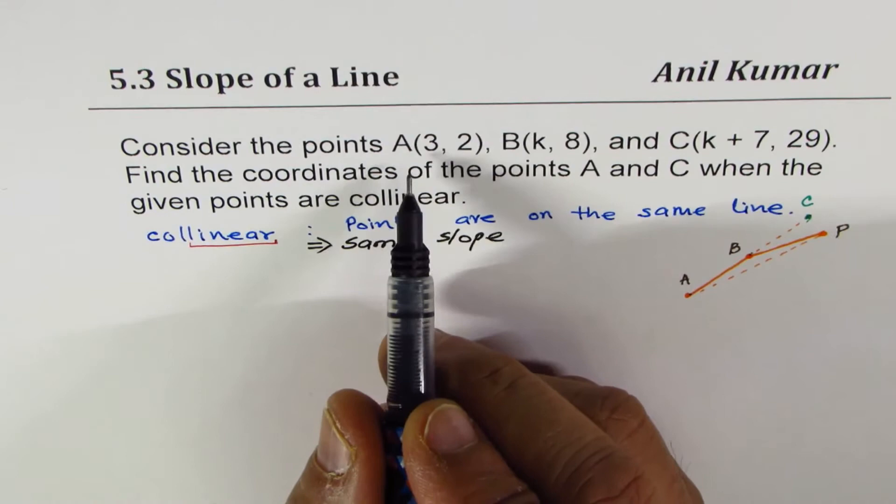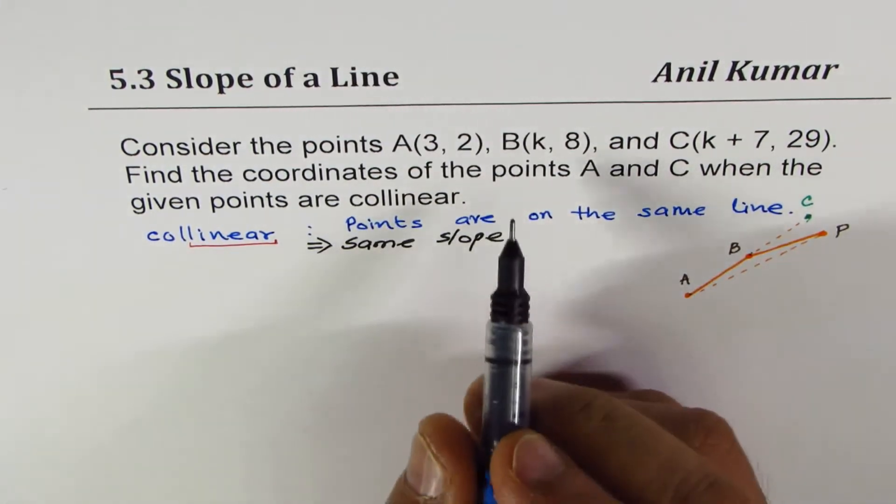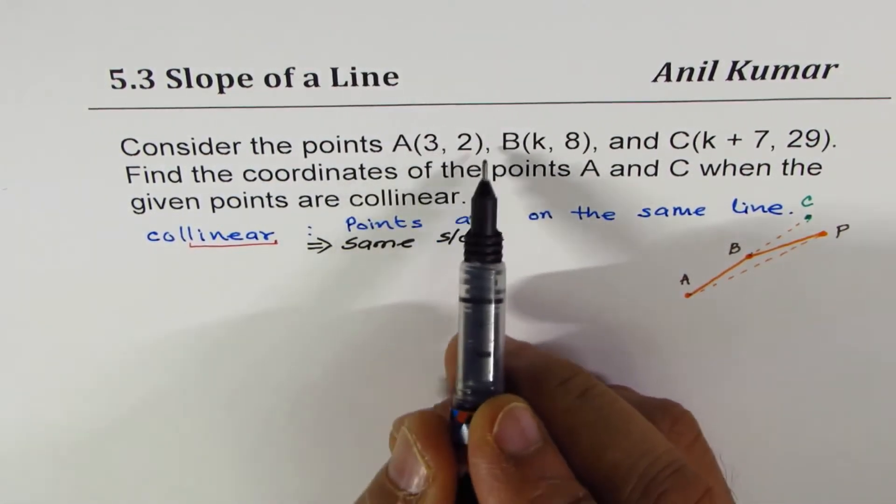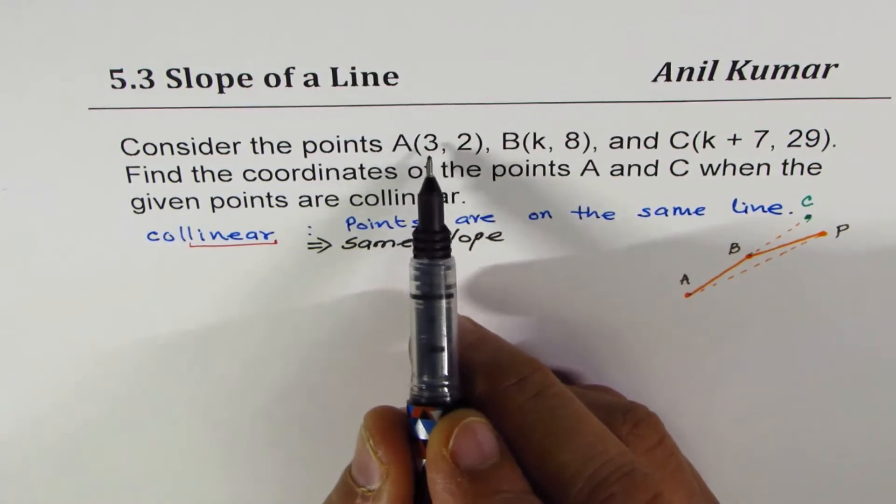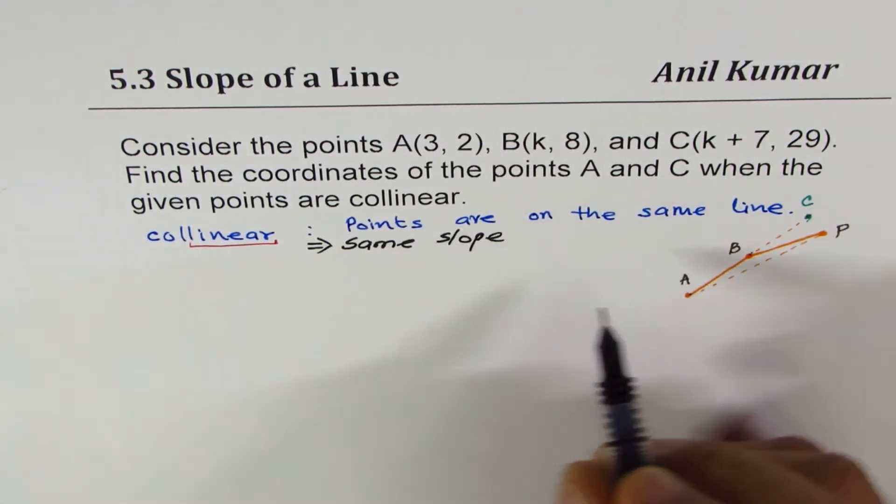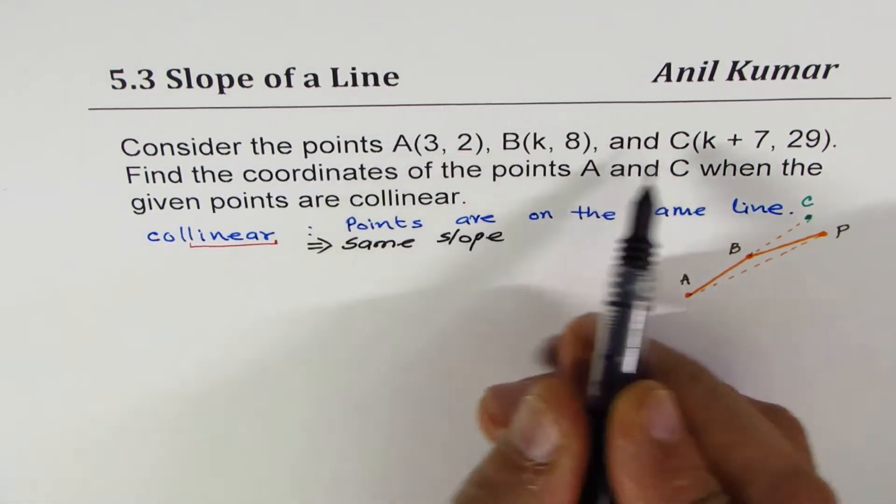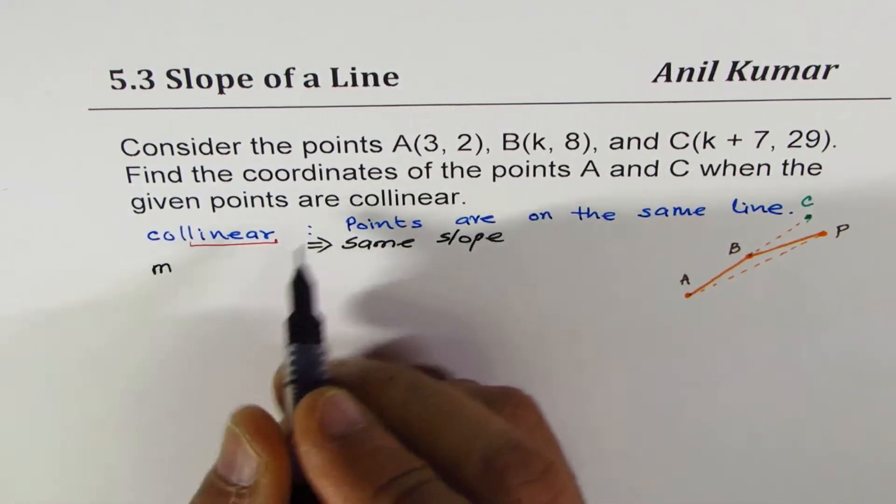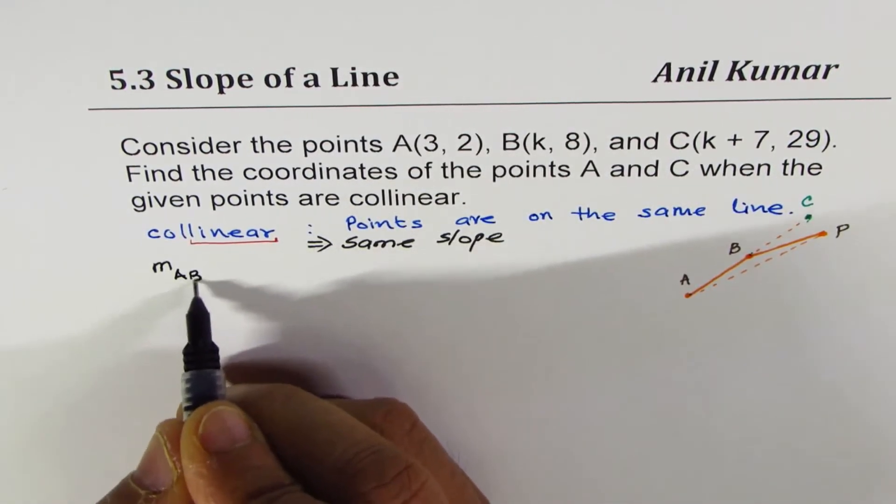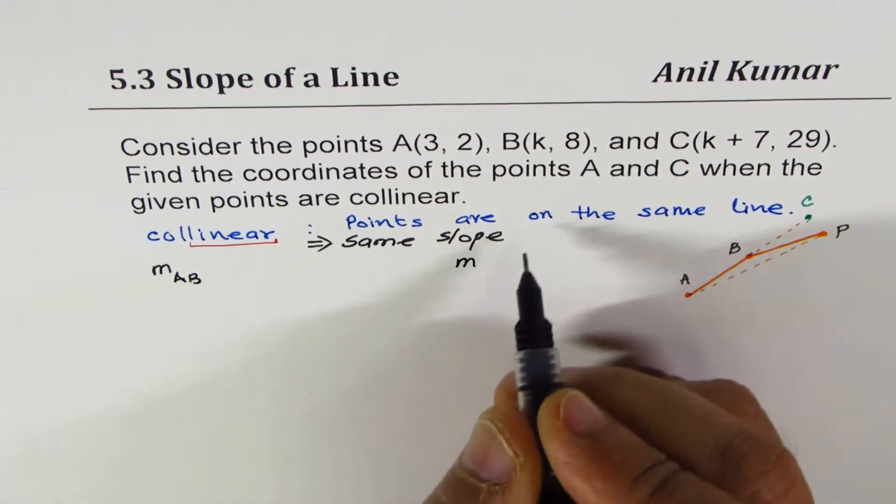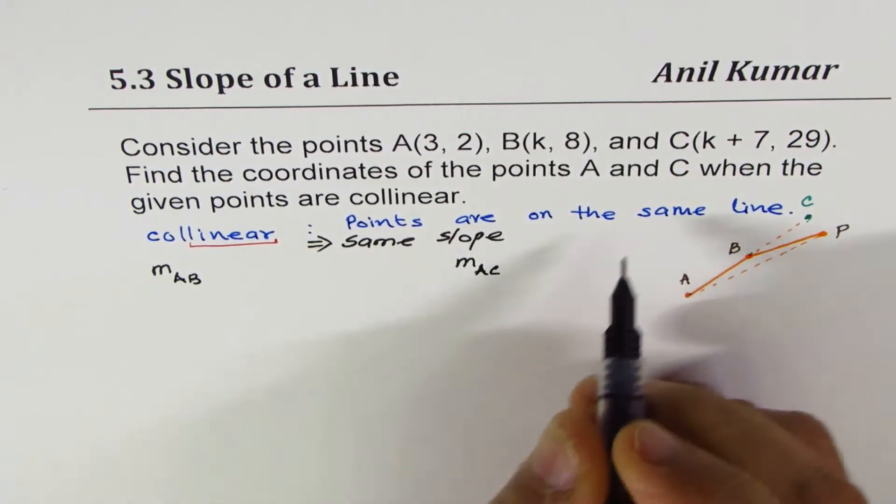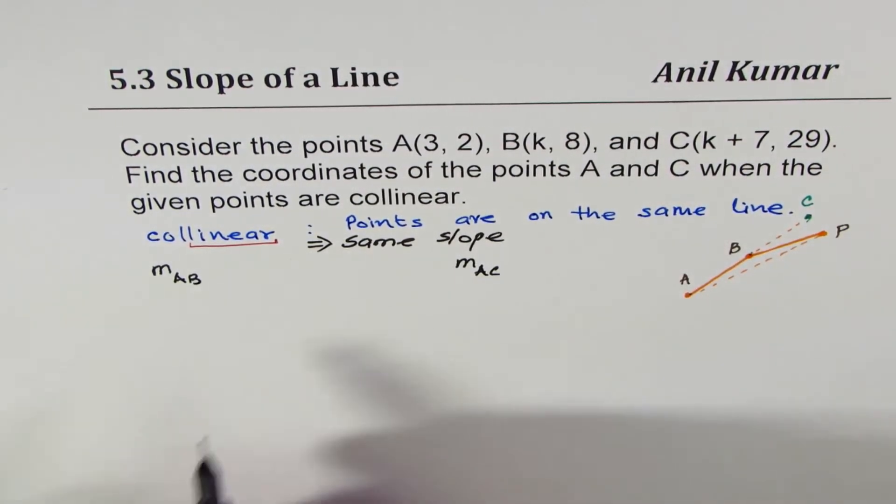Let's find slope between two points. We should definitely cover a point which is totally given to us. A is (3, 2). We'll find, in this case, slope from A to other two points. Basically, we'll try to find the slope between A and B, and we'll also find slope between A and C. And then we'll equate them. That's the whole idea.